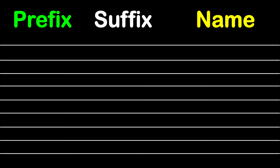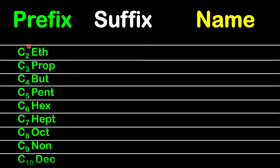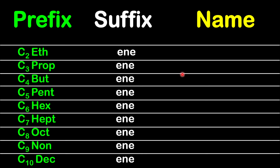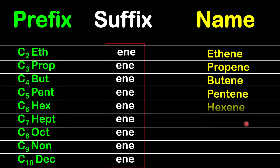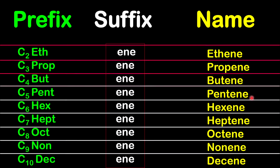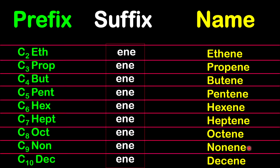The first member of the alkene group must start with two carbon atoms, so it begins at C2. The reason is that there must be a double bond between at least two carbon atoms. The suffix for alkene is '-ene', so merging the prefix with the suffix gives us: ethene, propene, butene, pentene, hexene, heptene, octene, nonene, and decene.